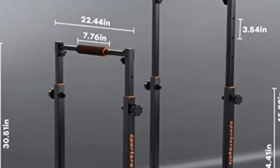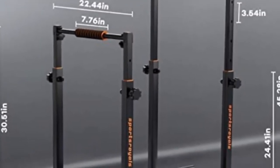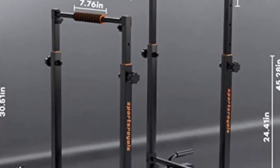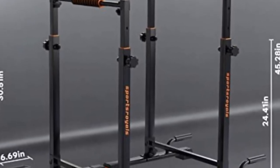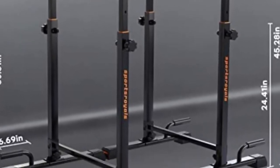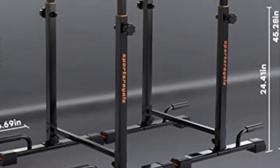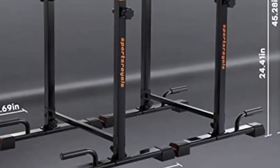Hey guys, Patrick here. Today I'm going to be talking about the Sports Royale adjustable dip bars that I got off of Amazon for $140. These are dip bars for you to use at home.